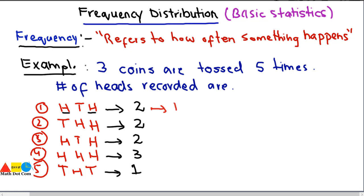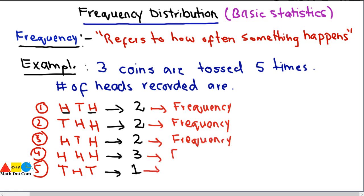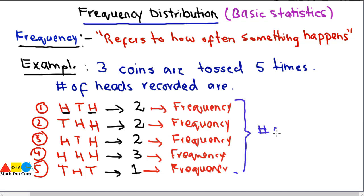So what do two, two, two, three, one mean? These are the frequencies — the frequency of the number of heads recorded. Each value is a frequency, and the same is the case for the rest as well. This is how we understand the concept of frequency in statistics — how to find the frequency of a certain event. Here the frequency refers to the number of heads appearing in each toss.